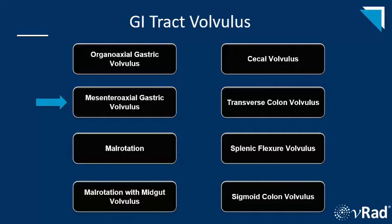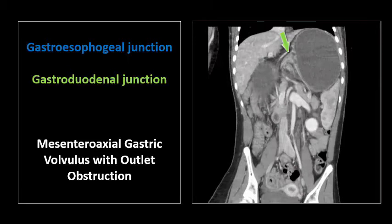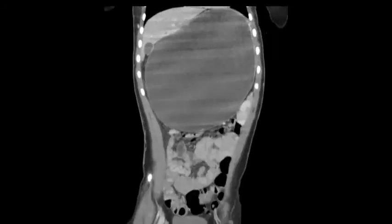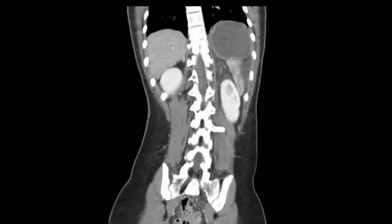The next case is also gastric volvulus, this time along the stomach's short axis, called a mesenteraxial volvulus. Here we see the gastroesophageal junction and the gastroduodenal junction, which are very close together, and you see swirling at the root of the mesentery. This is a pediatric patient and the stomach is significantly distended with fluid, and there's no hiatal hernia. The coronal cineviews show the extent of gastric dilatation and the relevant anatomy. The stomach is obstructed, but there's no evidence of ischemia.